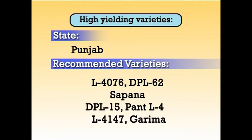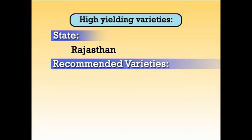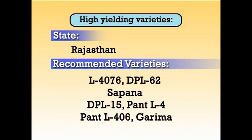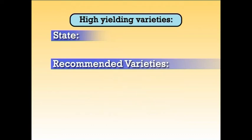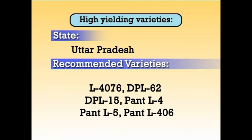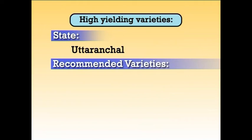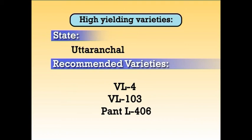For Uttarakhand — DPL 15, Pant L4147 and Garima; for Rajasthan — L4076, DPL 62, Sapna, DPL 15, Pant L4147 and Garima; for Uttar Pradesh — L4076, DPL 62, DPL 15, Pant L4, Pant L5 and Pant L406; for Uttaranchal — VL4, VL103 and Pant L406.